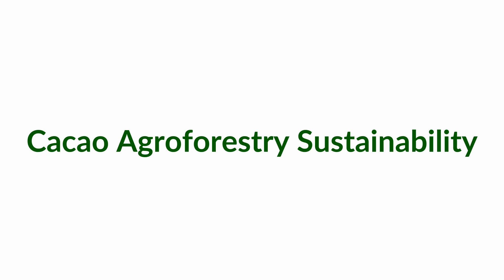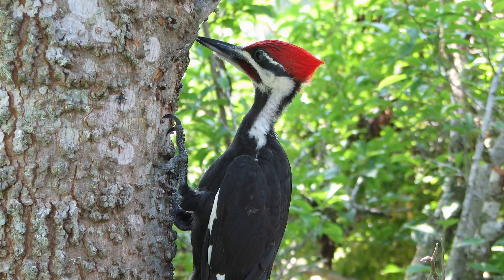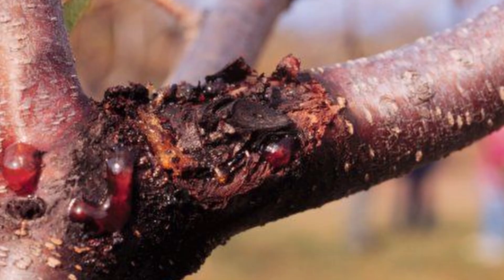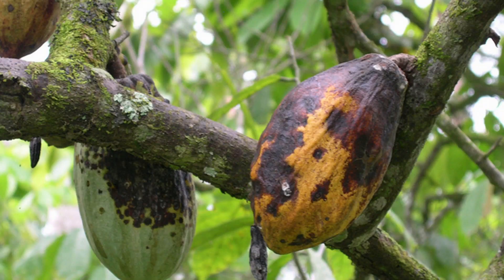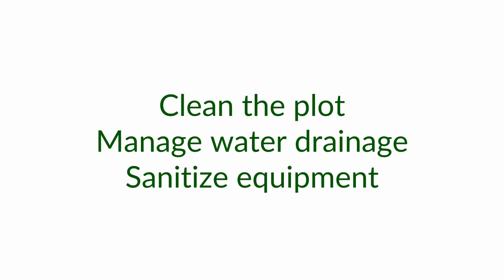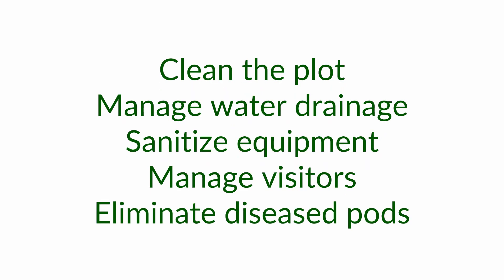Kakao agroforestry sustainability looks at common pests and diseases, which include squirrels, woodpeckers, monilia or better known as black pod, infected cuts, stem borers, and root rot. For management of pests and disease, the farmer will need to clean plots regularly, manage water in the plot and ensure proper drainage, use sanitized equipment for pruning, manage the number of visitors coming into the plot to avoid contamination, and eliminate and bury diseased pods from the tree.